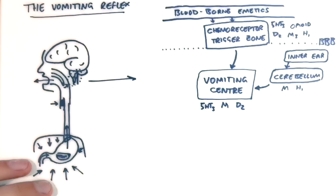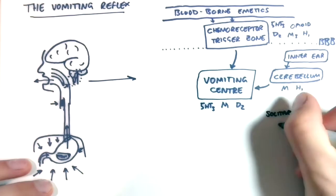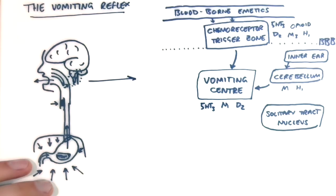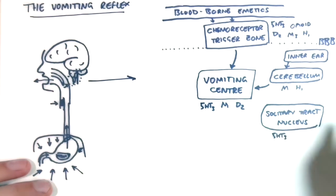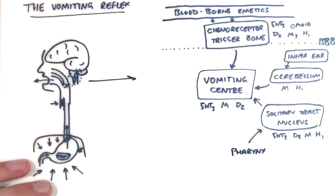Two other sensible triggers would be physical obstruction of the pharynx, as is seen in the gag reflex, or over distension of the stomach, for example after eating far too quickly. Both of these trigger the vomiting centre via the solitary tract nucleus, which is also in the medulla right next to the vomiting centre, and again these work via familiar receptors.